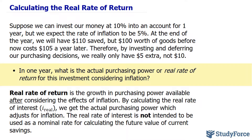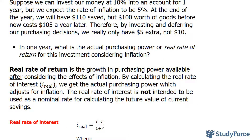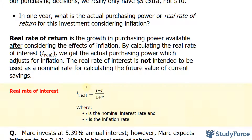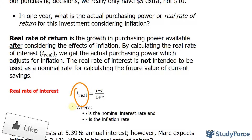To answer this question, we must calculate the real rate of interest using the formula shown here. The value we get for I_sub_real, which is a percentage, tells us the actual purchasing power after the impact of inflation. This is not to be confused with a nominal interest rate used to calculate some future value of a current saving — it's completely different.